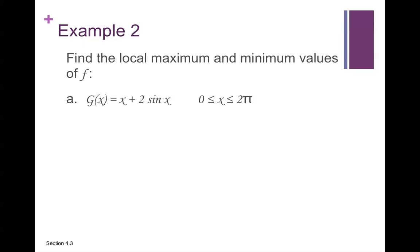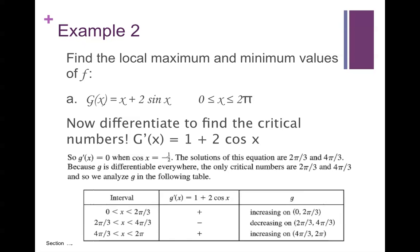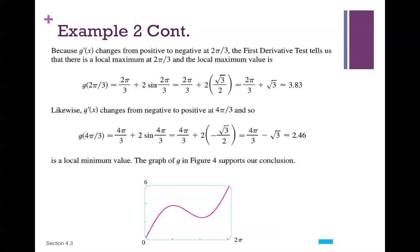Find the local maximum and minimum values of g of x equals x plus 2 sin x on the interval from 0 to 2 pi. Differentiate to find the critical numbers. Plugging them in, we find it is increasing between 0 and 2π/3, decreasing from 2π/3 to 4π/3, and increasing from 4π/3 to 2π. Therefore there is a local max at 2π/3 and a local min at 4π/3. The graph supports what we have just found; take time to look at and analyze this before moving on.